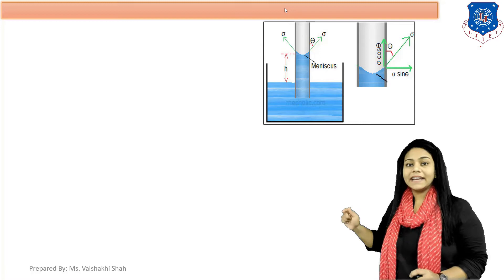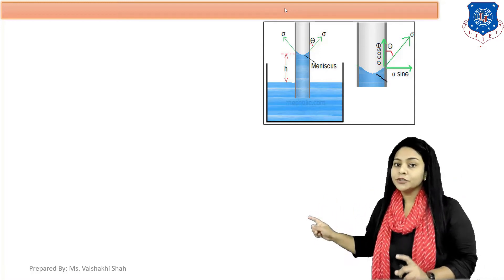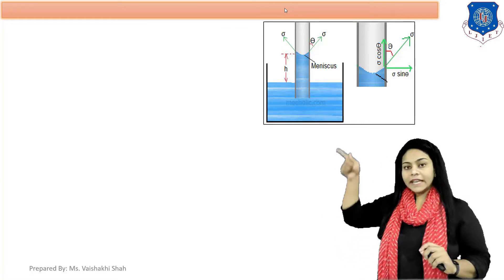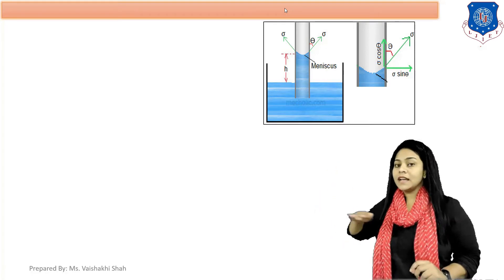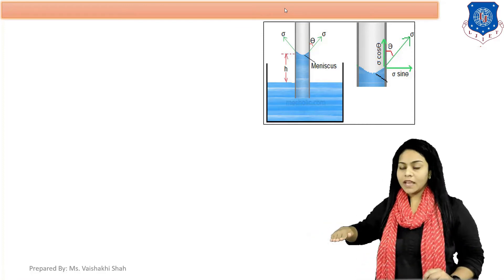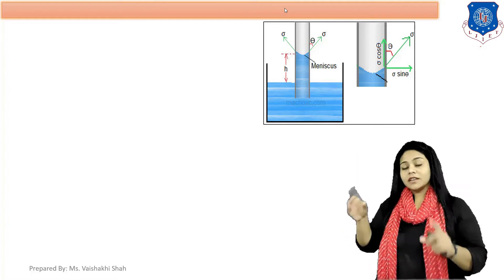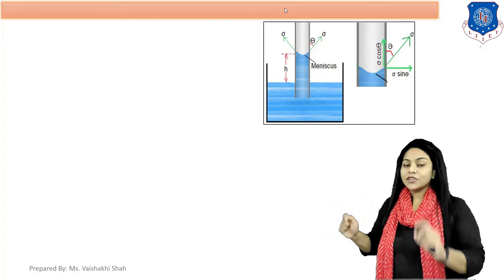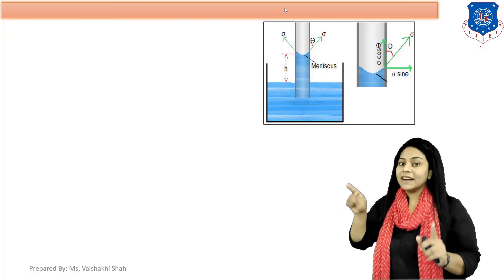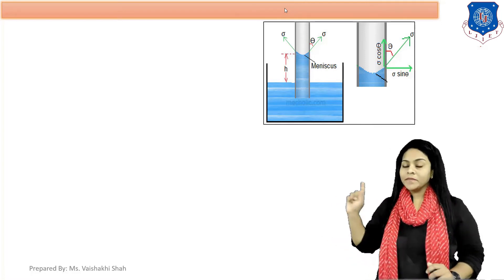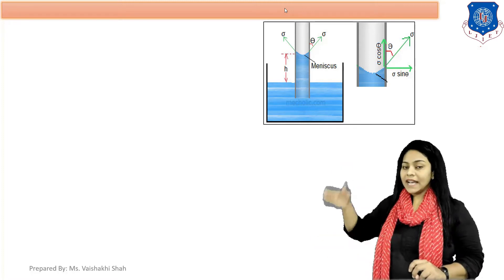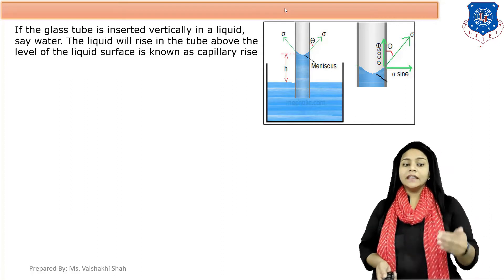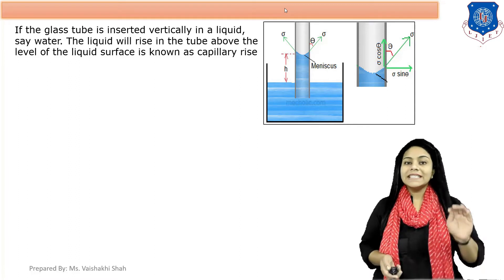Sigma is acting at angle theta. Because Sigma is inclined at angle theta, there are two components: the vertical component is Sigma cos theta and the horizontal component is Sigma sine theta. The container is filled with water; a small glass tube of diameter D is immersed in the water, and liquid rises up to height H — that height is called capillary rise. Surface tension Sigma acts at angle theta, giving vertical component Sigma cos theta acting upward and Sigma sine theta acting horizontally.